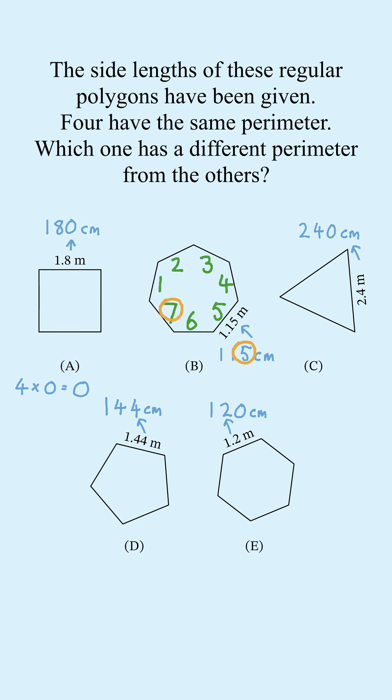For B, we have 7 times 5, which gives the last digit of 5, and C also gives us 0.